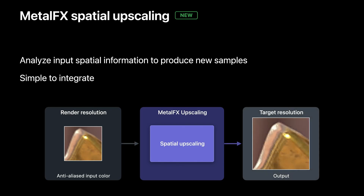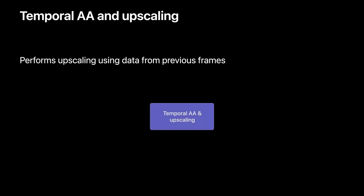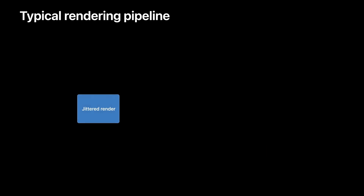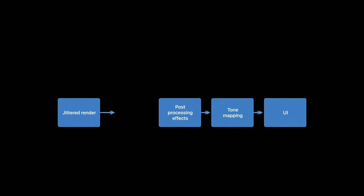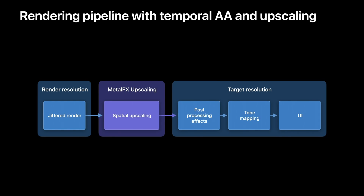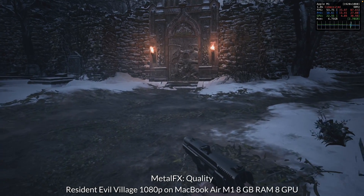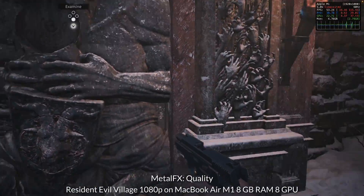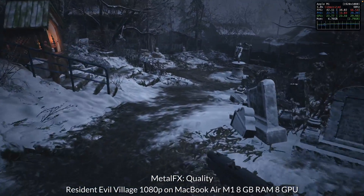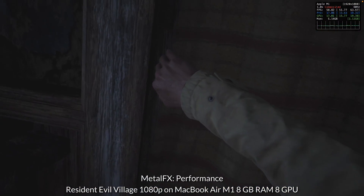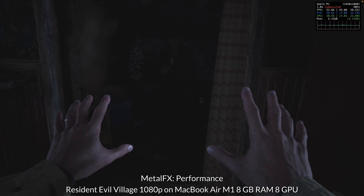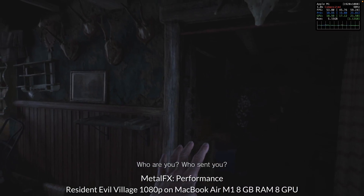Developers who want to use Metal FX actually have two different ways of performing the upscaling: spatial upscaling and temporal upscaling. It's not super clear to me exactly which type is being used by Resident Evil Village — it could be that the quality and performance modes use different upscaling methods. Metal FX gives even the lowliest M1 Mac a roughly 33% or 10 FPS boost over non-Metal FX rendering, and if you desperately want even more performance, you can turn on performance mode and gain a roughly 50% increase in frame rate at the cost of some visual quality.